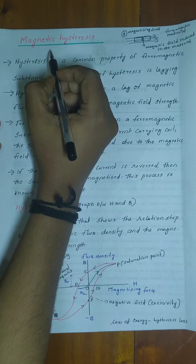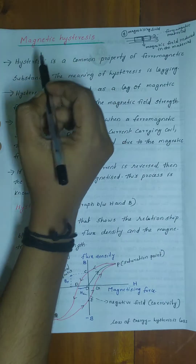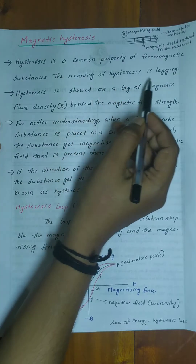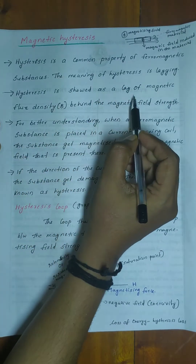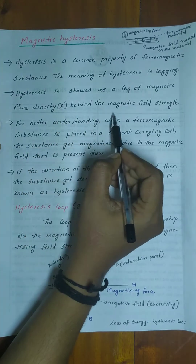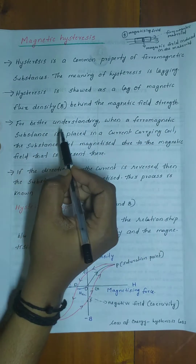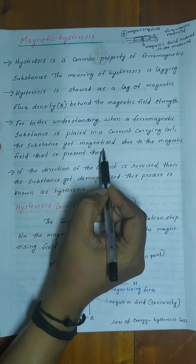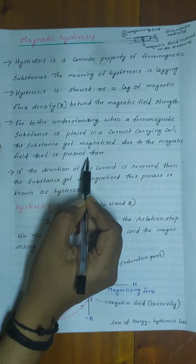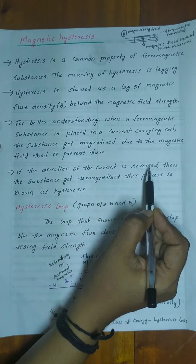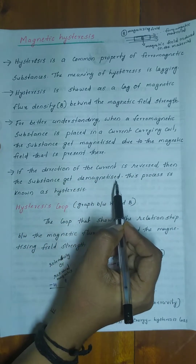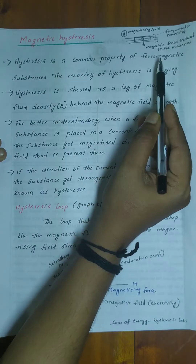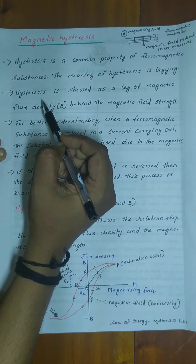Good morning. Today we are discussing magnetic hysteresis. Hysteresis is a common property of ferromagnetic substances. The meaning of hysteresis is lagging. Hysteresis is shown as a lag of magnetic flux density B behind the magnetic field strength H. When a ferromagnetic substance is placed in a current-carrying coil, the substance gets magnetized due to the magnetic field present. If the direction of current is reversed, the substance gets demagnetized. This process is known as hysteresis.